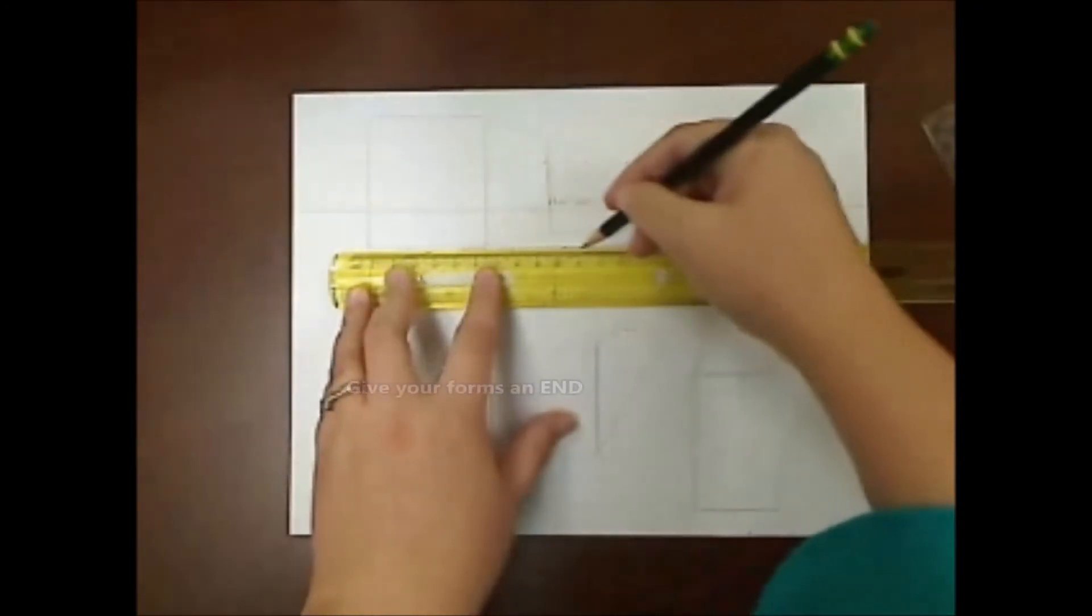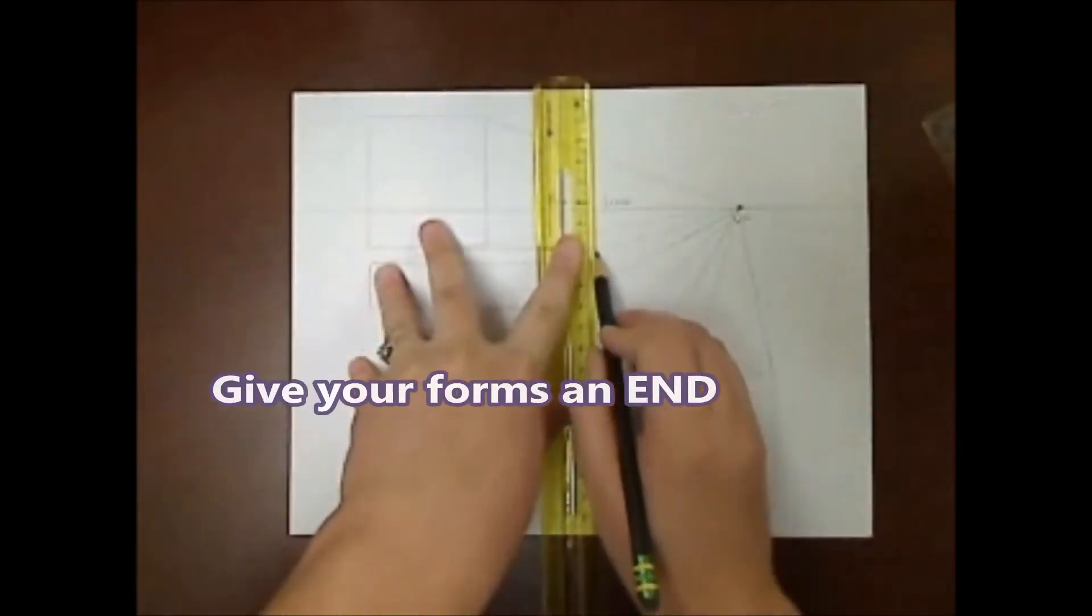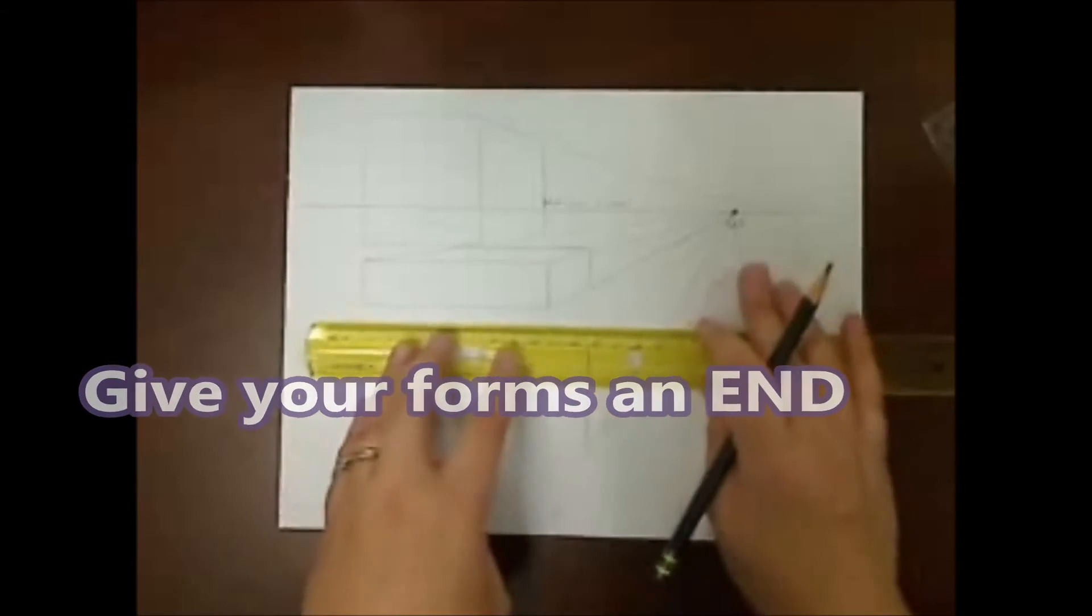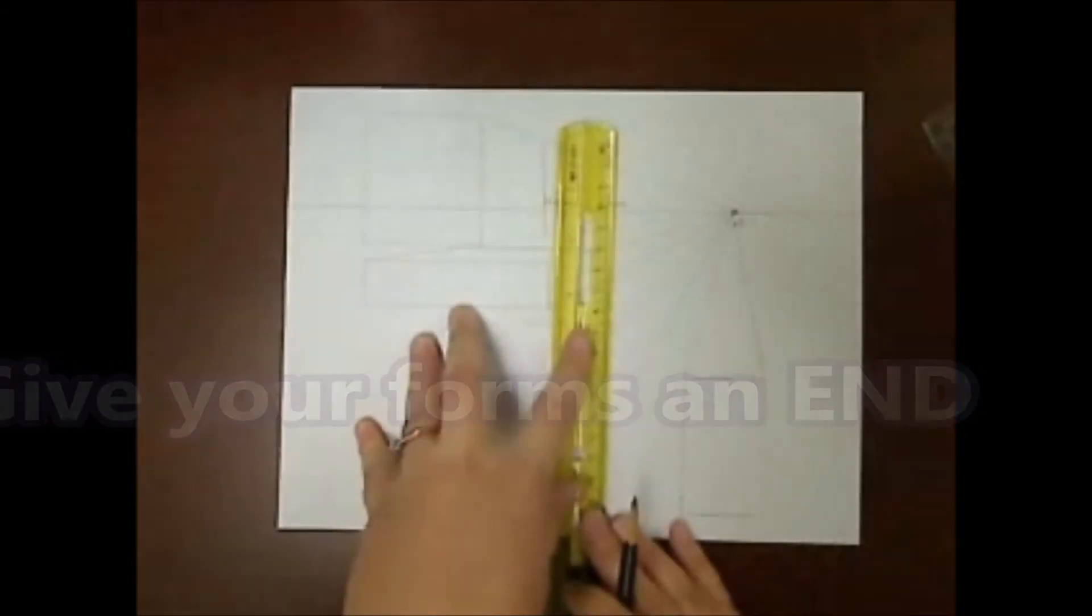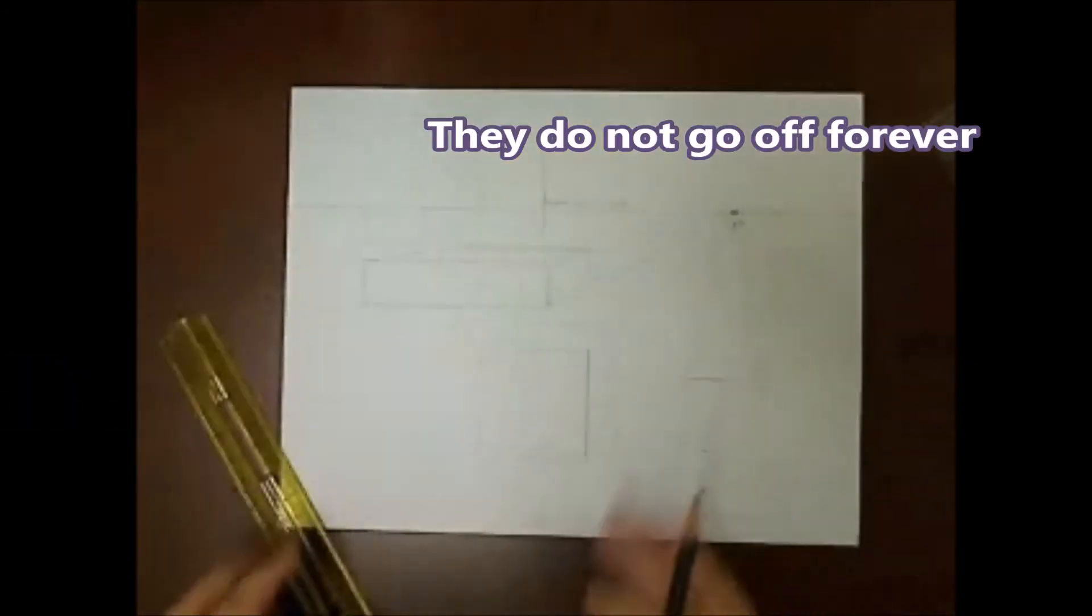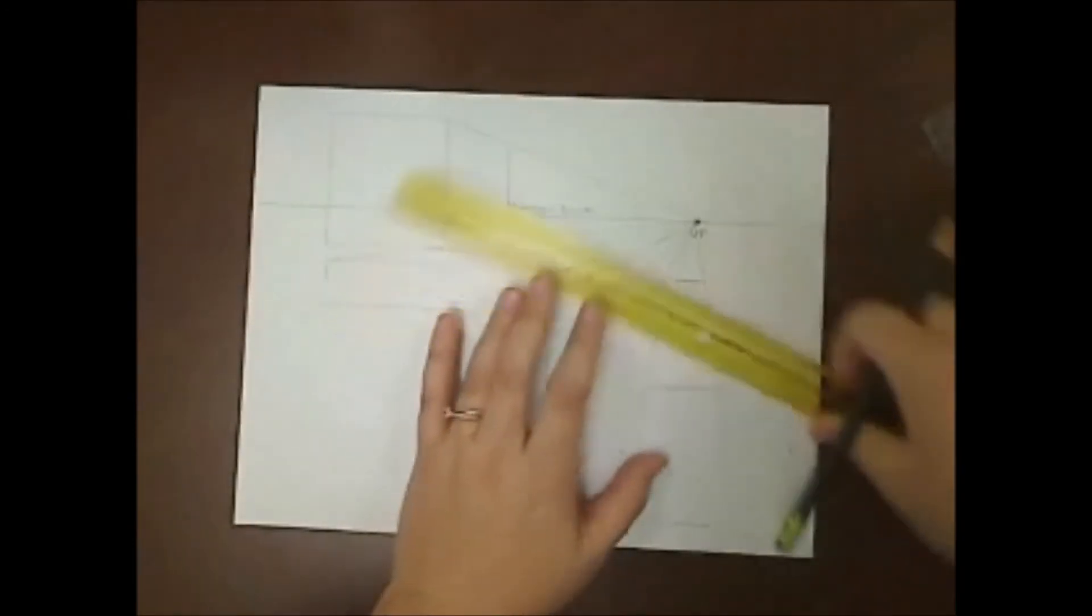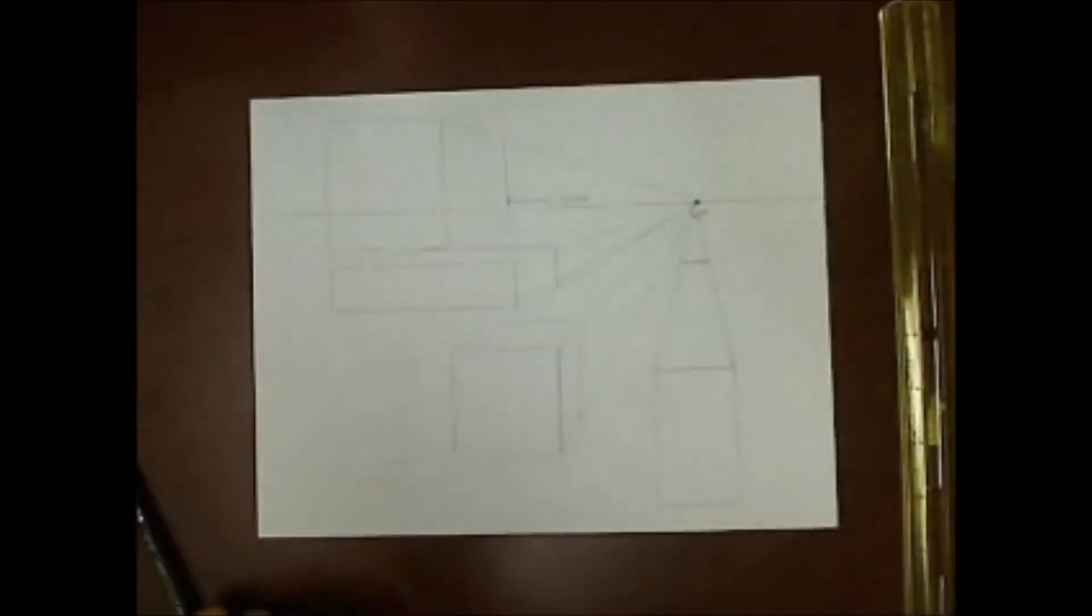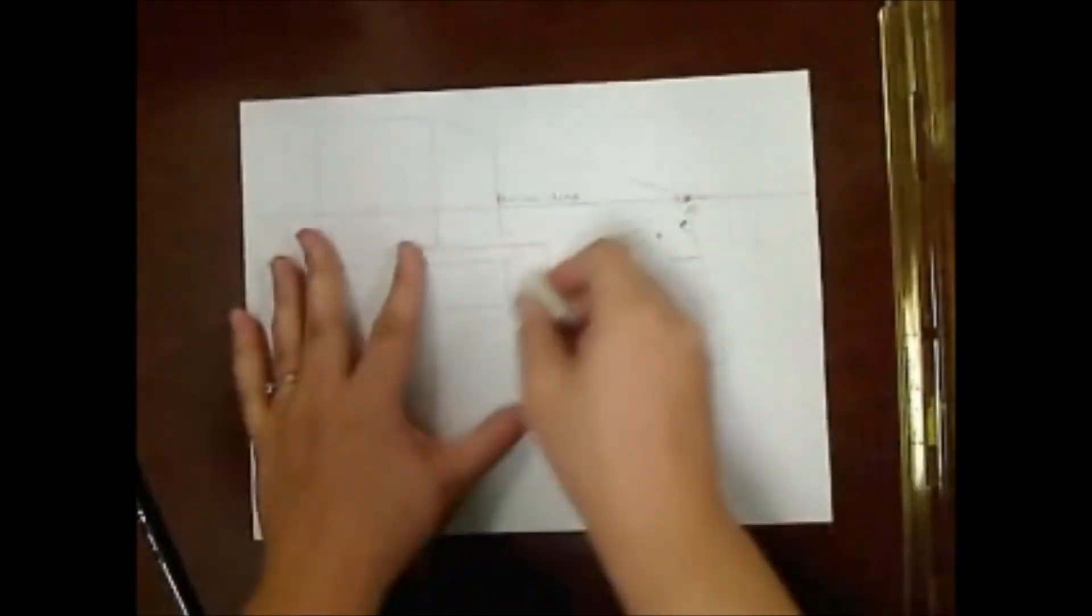Now we will create parallel or perpendicular lines to create the edges of our object. We are ending where they land in space. They do not go infinitely into the vanishing point.